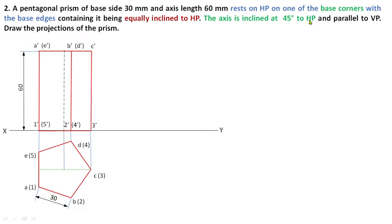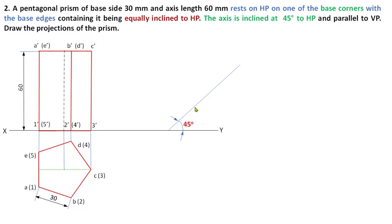The axis is inclined at 45 degrees to HP. This axis and the 3 dash–C dash edge and all the longer edges are parallel to each other. So if I tilt the 3 dash–C dash edge to 45 degrees, the axis also makes an angle of 45 degrees. Take any point on XY, draw a projector line at 45 degrees inclination. The length is 60 mm, so reproduce the same front view on this 45 degree inclination line.